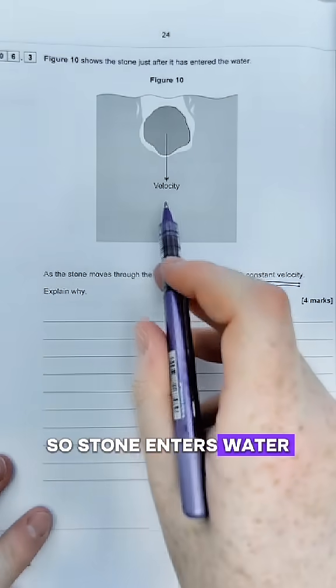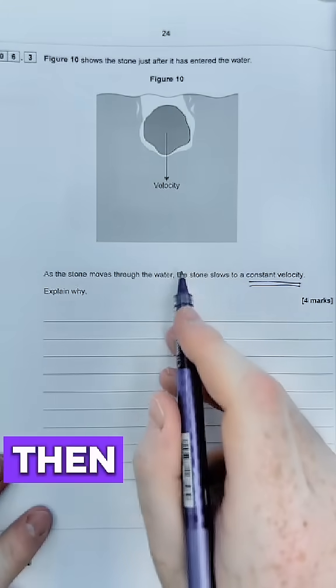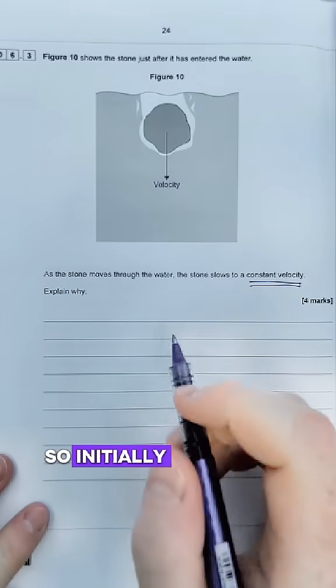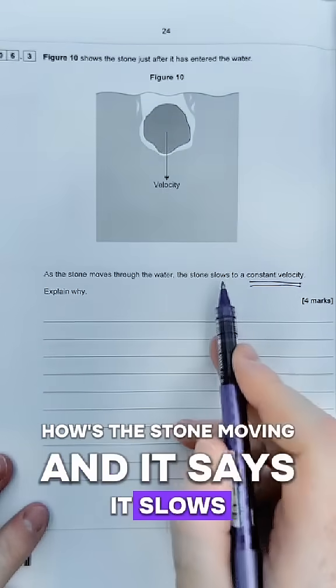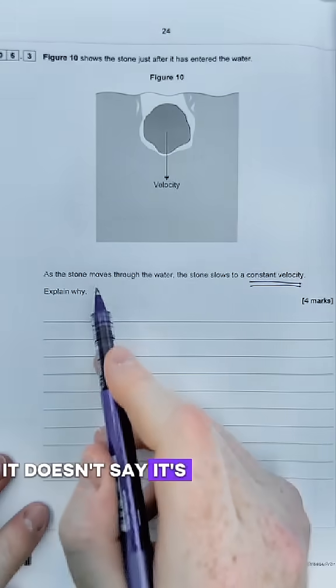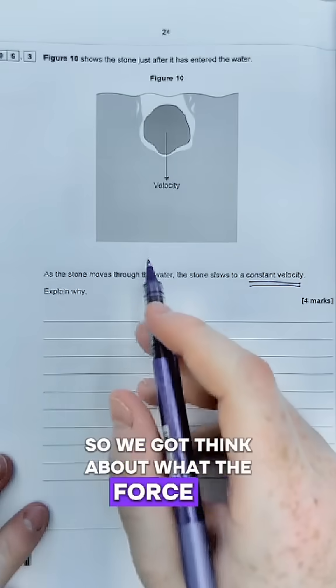A stone enters water, its velocity is going downwards, then it says it reaches a constant velocity. So initially we've got to think about how is the stone moving and it says it slows to a constant velocity. It doesn't say it's accelerating, so we've got to think about what forces are acting on this stone.